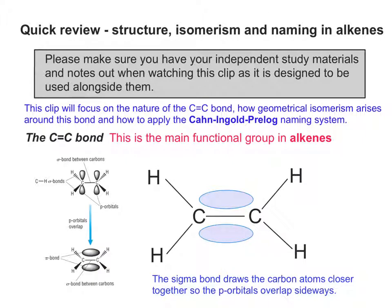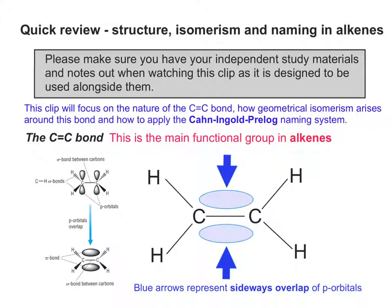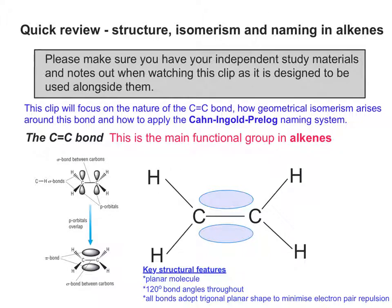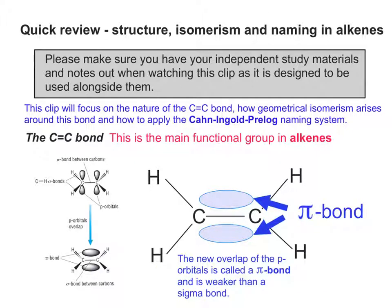The sigma bond draws the carbon atoms closer together so the p-orbitals overlap sideways, drawn as two shapes. The two purple areas represent the sideways overlap of the p-orbitals — this is how you should draw it in an exam if asked. The key structural features of the carbon-carbon double bond are that it's planar, with 120-degree bond angles throughout, and all bonds adopt a trigonal planar shape around the double bond to minimise electron pair repulsion. This resulting overlap of the p-orbitals is called a pi bond, and it's actually a bit weaker than a sigma bond.